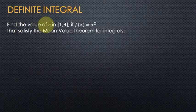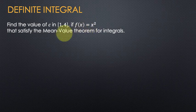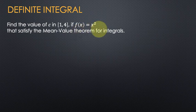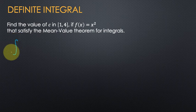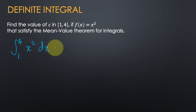Find the value of c in [1, 4], if f(x) equals x squared, that satisfies the Mean Value Theorem for integrals. The first step is to find the definite integral from 1 to 4 of x squared dx, which equals x cubed over 3.